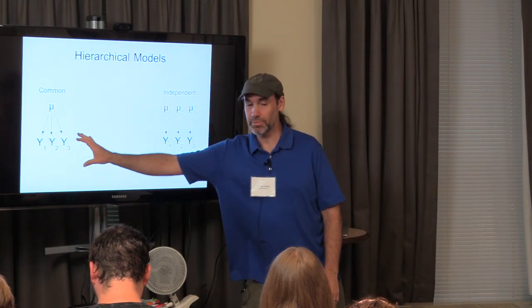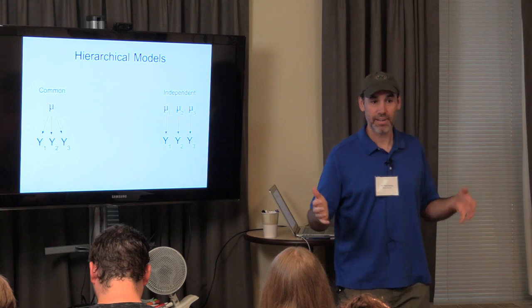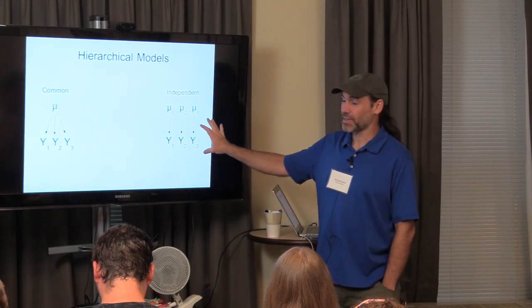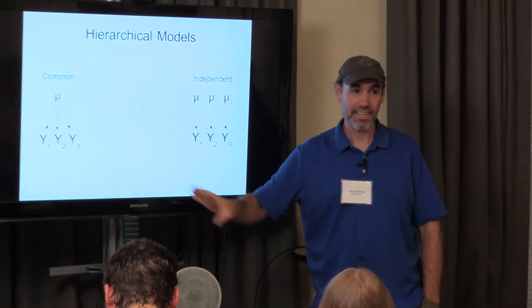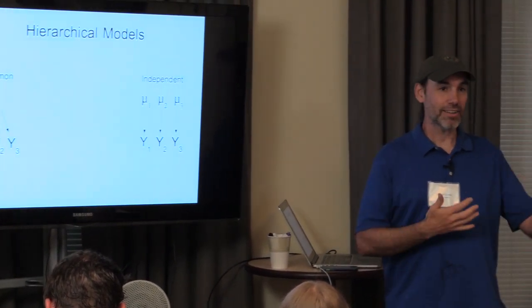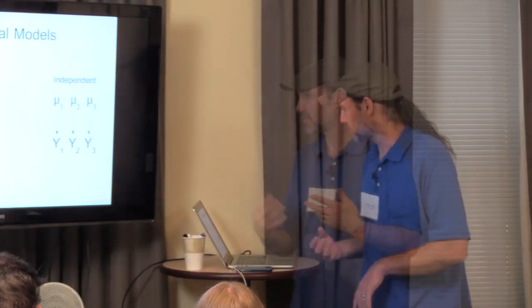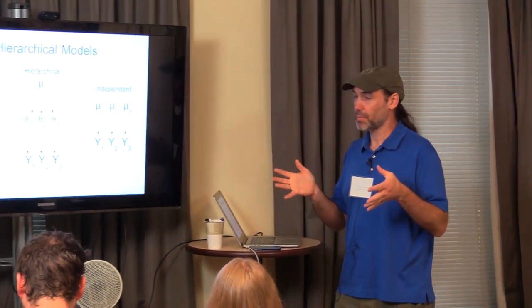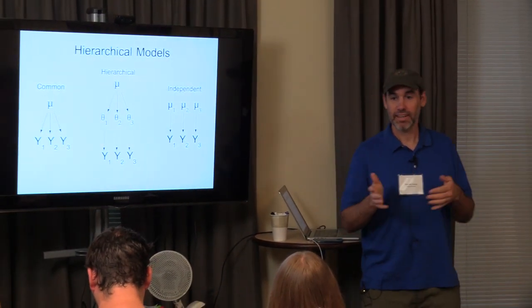These represent the extremes of a continuum — from all observations being completely identical to all observations being completely independent. Often what we have in reality is something in between, where things are different from plot to plot, unit to unit, river to river, but not completely independent. There is shared information about the process, and this is where hierarchical models are handy — they provide this intermediate case to represent this continuum.